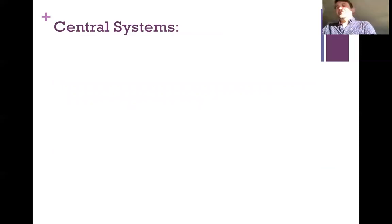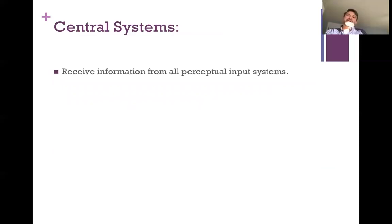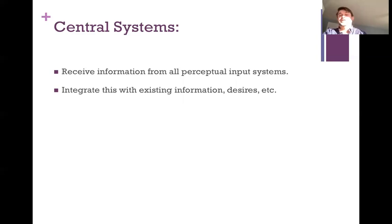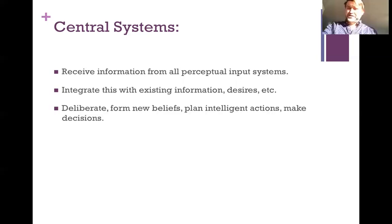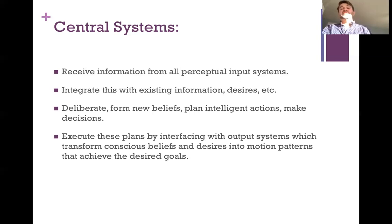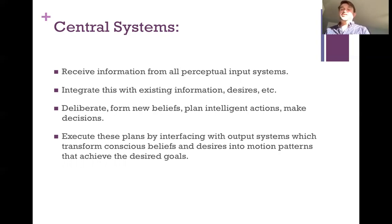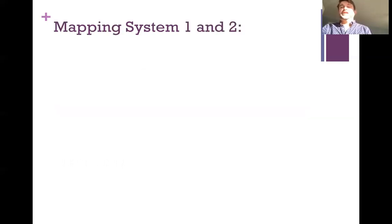There's also the question of what central systems are. We can describe them as receiving information from all the perceptual input systems, integrating this with existing information, background desires, and background knowledge, then deliberating to form new beliefs, plan intelligent actions, and make decisions. Central systems execute these plans by interfacing with output systems, which transform conscious beliefs and desires into motion patterns that achieve the desired goal. That's how central systems are described in Carston.